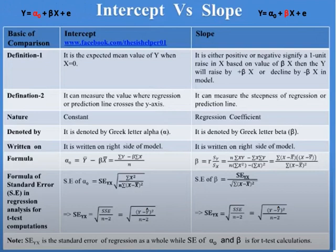Definition 2 of intercept is that it can measure the value where the regression or prediction line crosses the Y-axis. Whereas definition 2 of slope is that it can measure the steepness of the regression or prediction line.